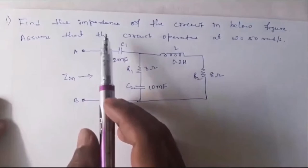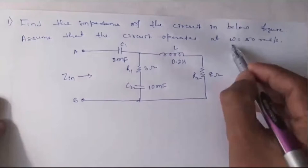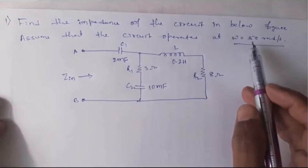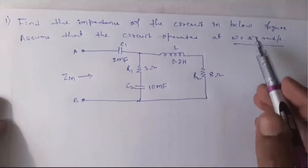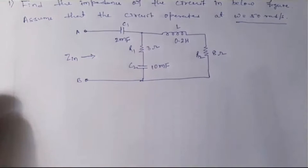Find the impedance of the circuit shown in the figure below. Assume that the circuit operates at omega equal to 50 radians per second. Omega is given because to calculate Z we require omega. So instead of directly giving Z, the capacitance and inductance values are given so that we can calculate impedance from them.